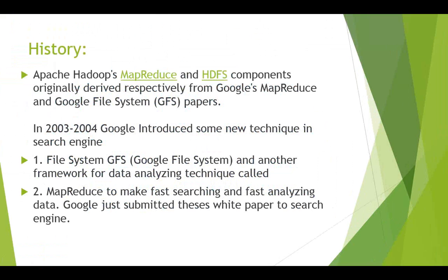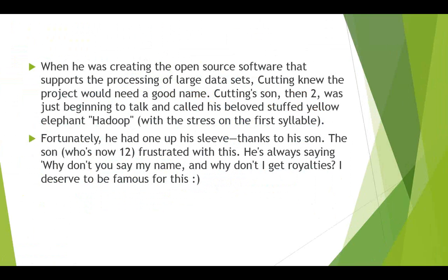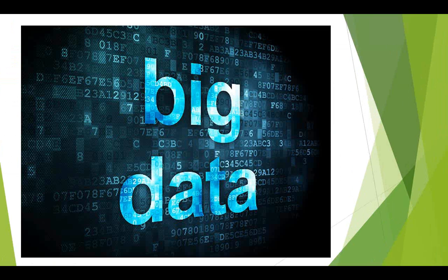Before going to the concept of big data, we have to look at the history. In the initial period, in 2003 and 2004, Google generated some ideas known as the Google File System (GFS) for storage, and MapReduce for processing that stored data. Google didn't implement it — they simply gave the idea. Later, in 2005 and 2006, Yahoo took the same idea and implemented it. The person who developed Hadoop was known as Doug Cutting.